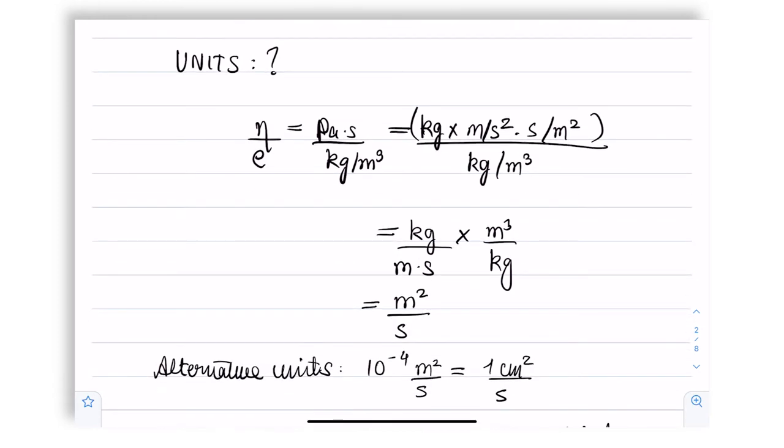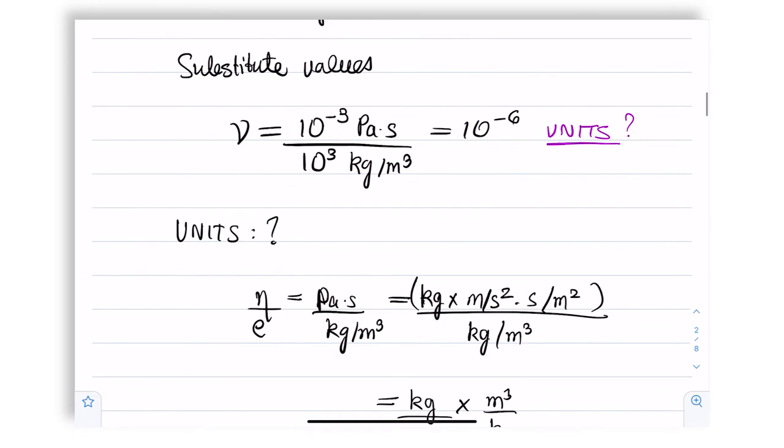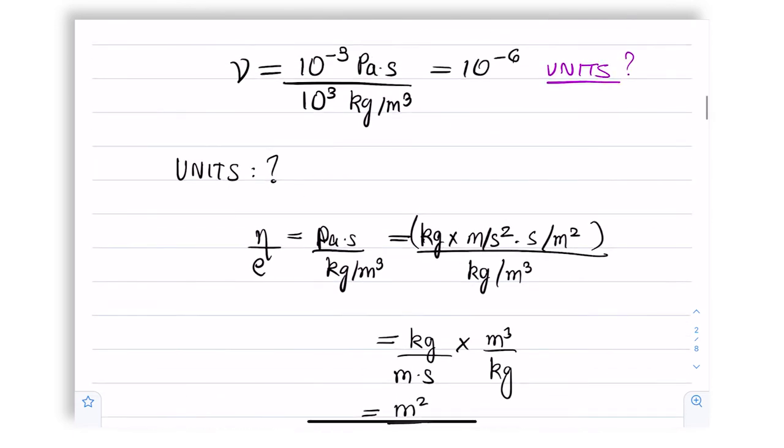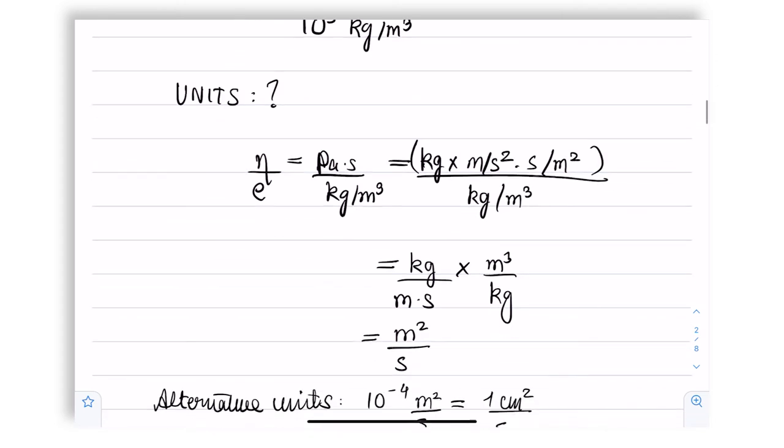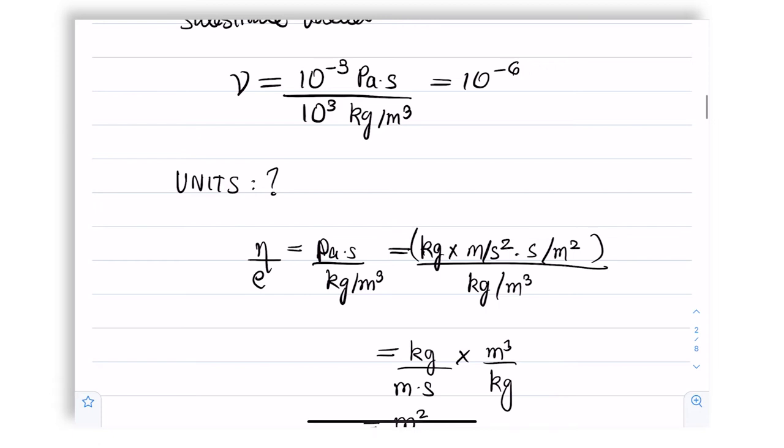...we end up with kg upon meter per second into meter cubed by kg, which leaves us meter squared per second. So this is 10 to the power minus 6, and now we can write the units as meters squared per second.